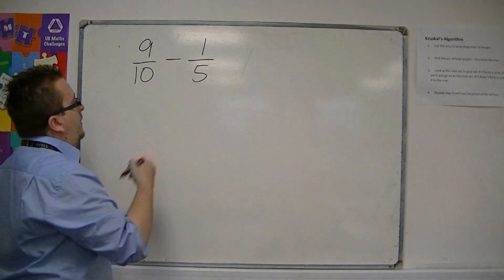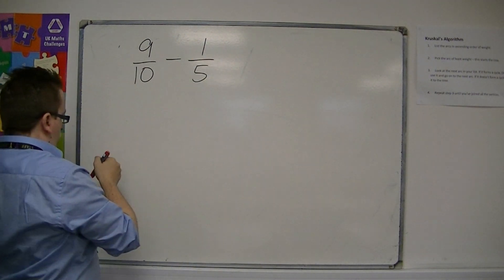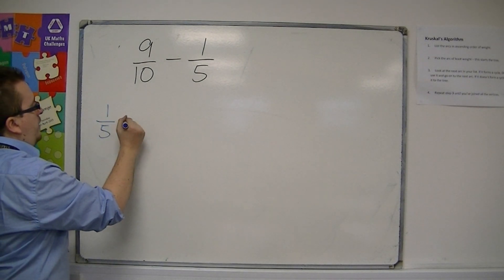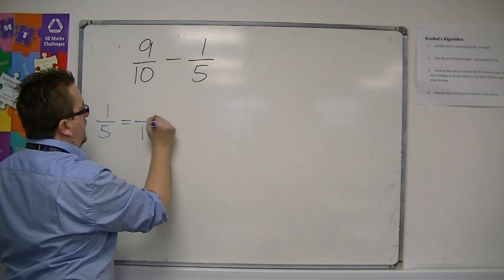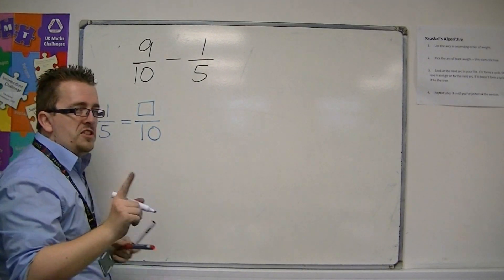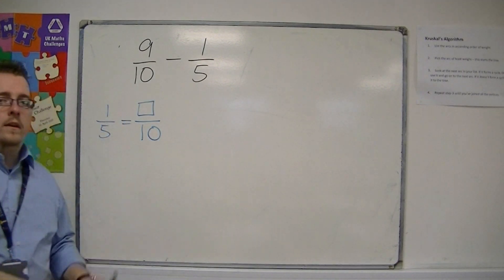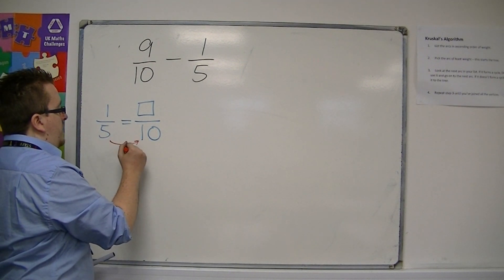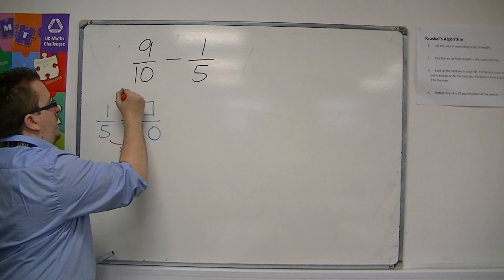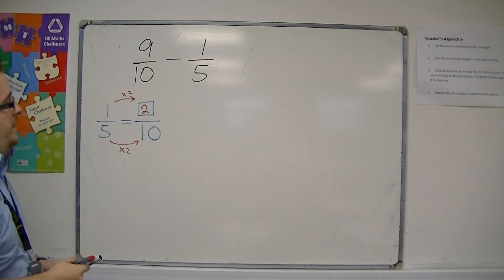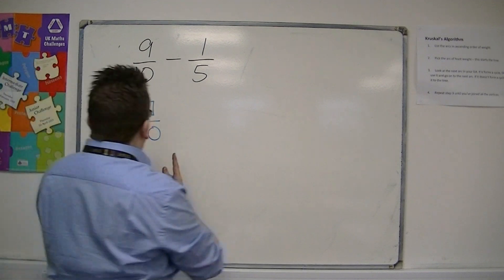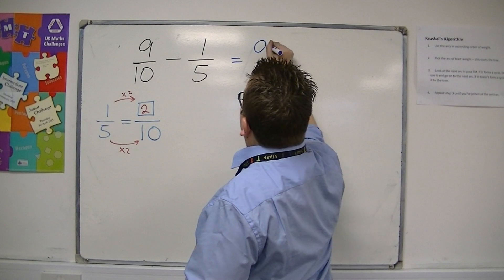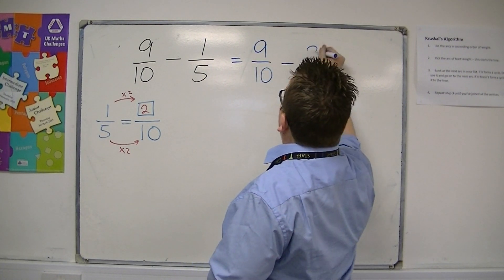So if I just look at this fraction and pull it to one side for the moment, I think to myself, OK, so 1 fifth is something over 10. So just like we did when we were looking at equivalent fractions, if I multiply the bottom by 2, I multiply the top by 2, so 1 fifth is 2 tenths. So I could write this as 9 tenths take away 2 tenths.